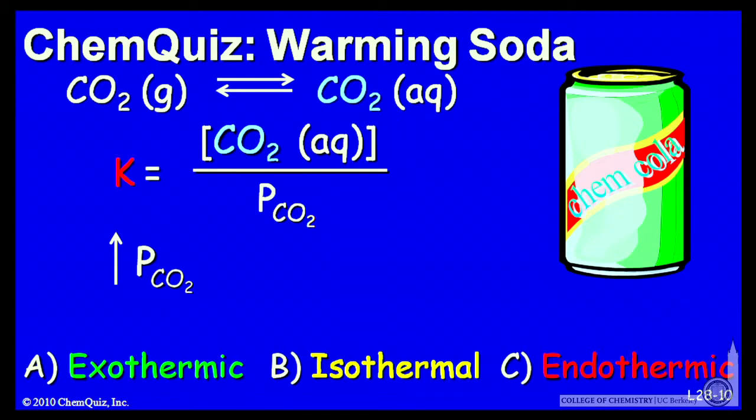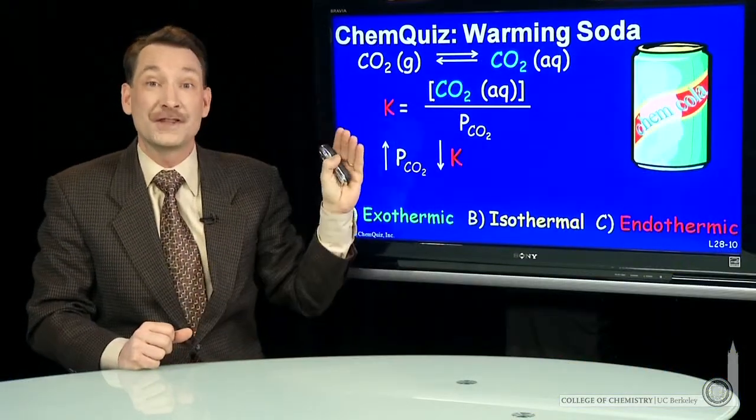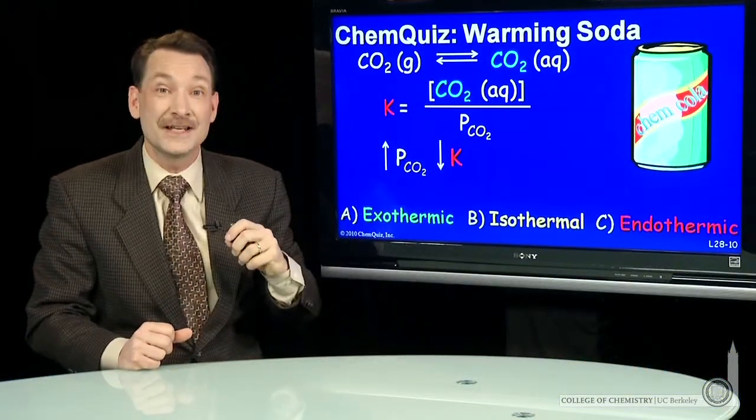So the partial pressure of carbon dioxide is going up. K is going down. So another way to look at that is, heat is a product and it shifts back. Or you can think of it as K is getting smaller.